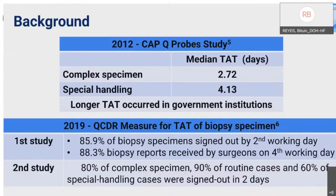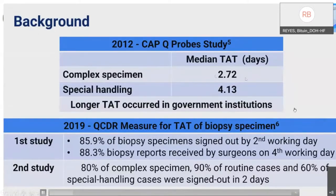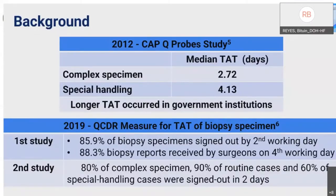In 2012, the College of American Pathologists, or CAP, conducted a multi-institutional Q-probe study enlisting 2,763 complex specimens from 56 institutions. The study reported the mean TAT for complex specimens to be 2.72 calendar days. Special handling cases had a median TAT of 4.13 days. Longer TAT occurred in government institutions, with median TAT of 6.06 versus 2.13 days in private institutions. In 2019, the CAP published a qualified clinical data registry measure for TAT of biopsy specimens.